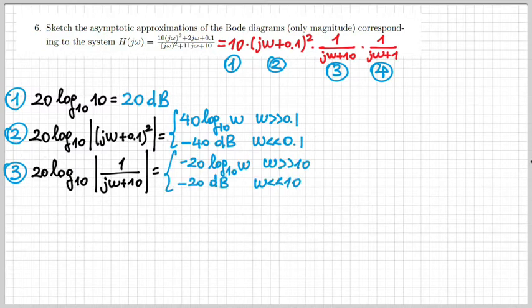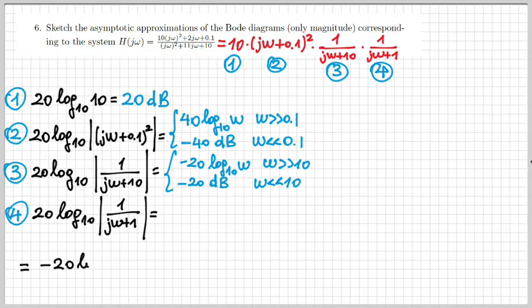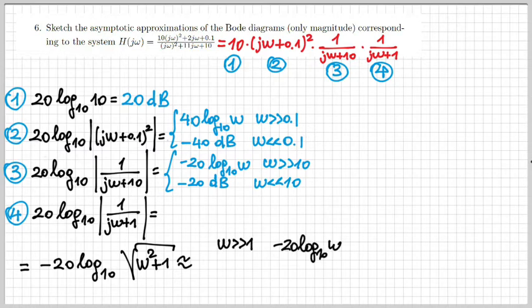Now the fourth and last term. We have 20 log₁₀ of the magnitude of 1/(jω + 1). If we read the magnitude of this complex fraction, we have minus 20 log₁₀ of √(ω² + 1). We can approximate this: when ω is much larger than one, we get minus 20 log₁₀ ω. When ω is much smaller than one, we get 0 dB.